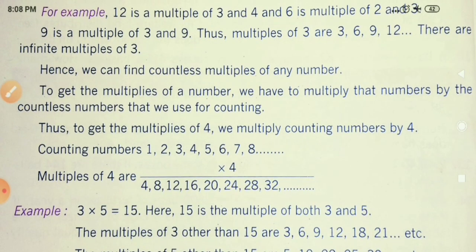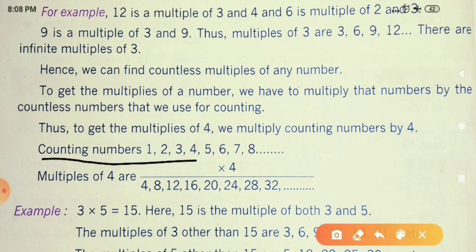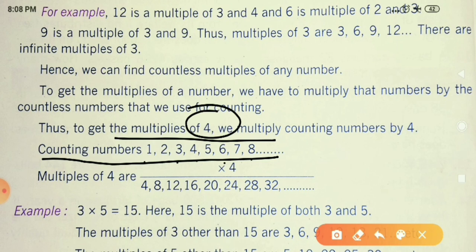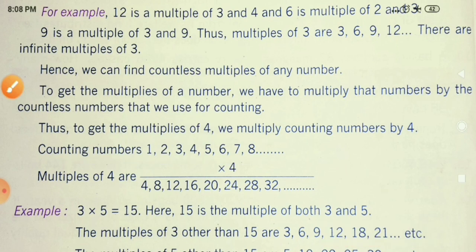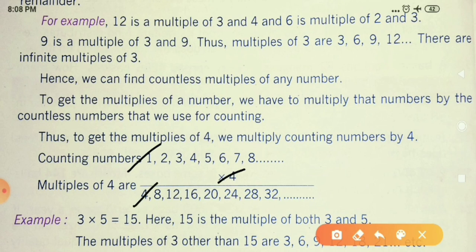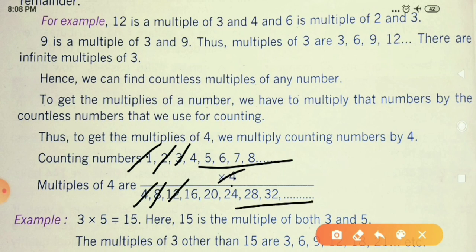To find multiples of a number, multiply it by the counting numbers 1, 2, 3, 4, 5, 6... For example, multiples of 4: 1×4=4, 2×4=8, 3×4=12, and so on. There are infinite multiples of any number — they are not limited.